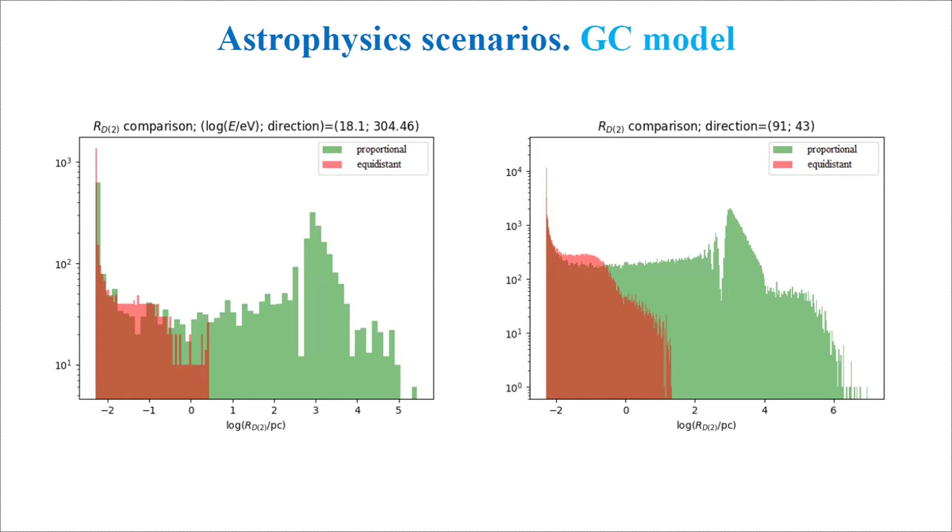These were summarized to compare the two already mentioned cases of distribution of particles over the observer's surface. The green is proportional, red is equidistant. Probably there is no reason to speak about equidistant once again. But what we can bring out of these plots...